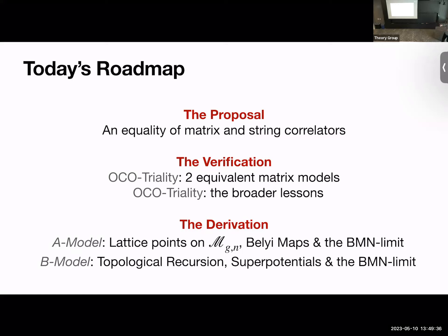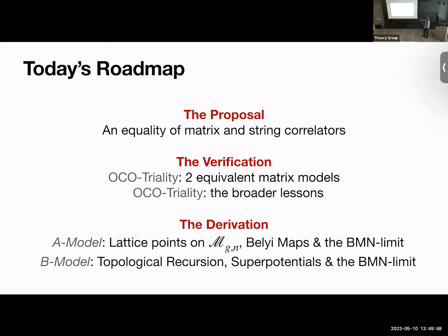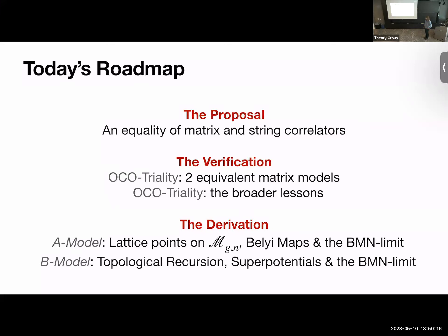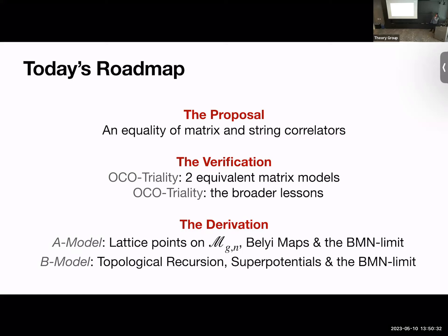Q: What is the momentum quantum number in the BMN limit? A: Trace M to the k for k very large. In the A-model this will be the amount of spectral flow. Q: Is there a conserved U(1)? A: It's like a cigar geometry — the winding U(1) is violated, but the translation U(1) is still there, and that's the one used for the large momentum in the BMN limit.